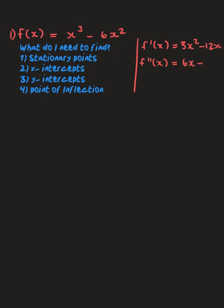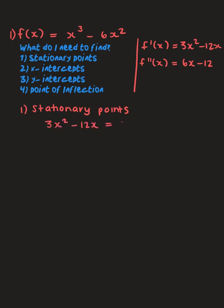For stationary points, we let the first derivative equal zero: 3x² - 12x = 0. Doing basic factorization to solve this quadratic, we get x = 0 or x = 4. We now have the x-coordinates of the stationary points and need to find the corresponding y-coordinates.